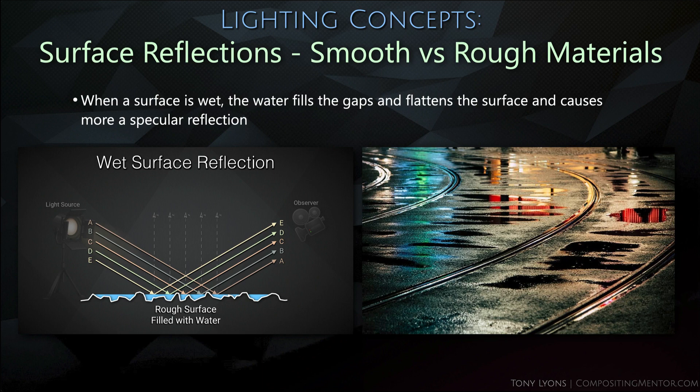There's a side note about what happens when a rough material gets wet. Water fills in the gaps of the roughness, creating a flatter surface. Since water is also very reflective and specular, a wet surface produces a more specular reflection. We all know this from driving on a rainy road — the headlights and environment highlights are strongly reflected on the wet ground.